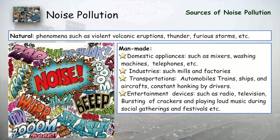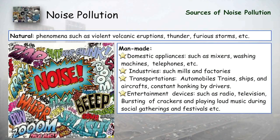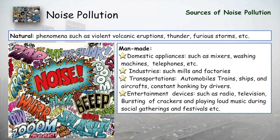Sources of noise can be divided into two parts: natural and man-made. Natural sources include violent volcanic eruptions, thunder, storms, and rain. Man-made sources include domestic appliances such as mixers, washing machines, and telephones; industries such as mills and factories; transportation like automobiles, trains, ships, and aircraft with constant honking; and entertainment devices such as radios, televisions, bursting of crackers, and loud music during social gatherings and festivals.